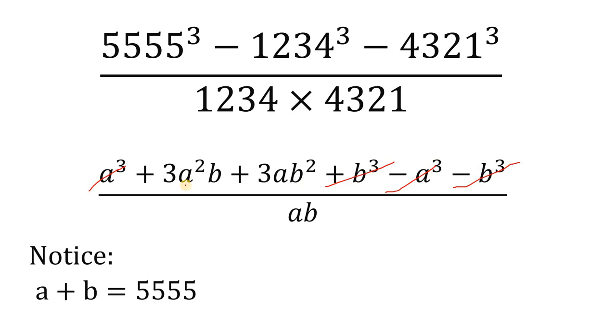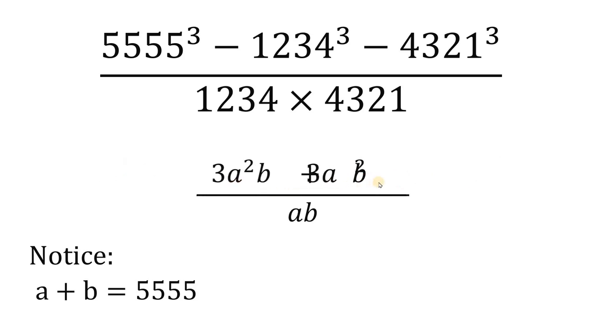The remaining terms are 3a²b + 3ab². Now, take note that we have double a in 3a²b and double b in 3ab². The common term is 3ab, so we can factor out 3ab on the numerator. This becomes 3ab(a+b).